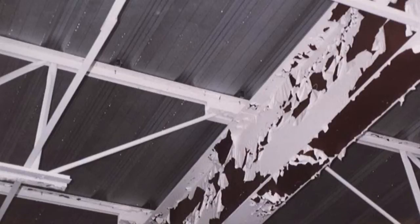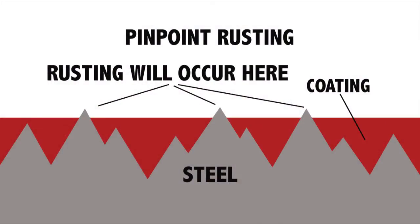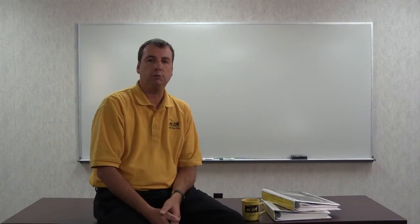While an inadequate surface profile depth may not properly anchor the coating system and debonding may occur, an excessive surface profile may cause rogue or unusual peaks to protrude above the coating film, causing pinpoint rusting and accelerated corrosion. Therefore, accurately assessing the surface profile depth for compliance with the project specification is paramount to a successful coating project.